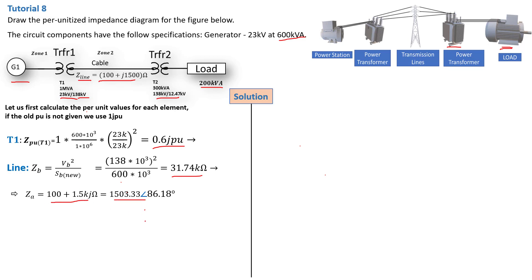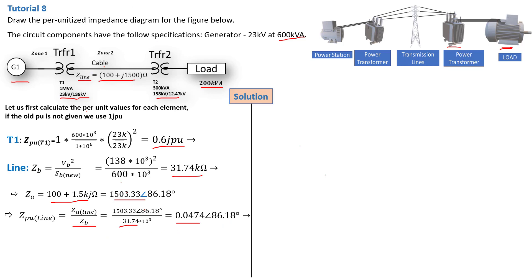After converting the line impedance into polar form we replace it in the formula Z per unit equals Z actual divided by ZB. With Z of the line as Z actual and 31.74 kiloohm as Z base, we get the per unit of the line equal to 0.0474 at an angle of 86.18 degrees — there is an angle because the line has inductance in its impedance. Converting back to rectangular form gives Z per unit of the line as 0.031 + j0.0473.